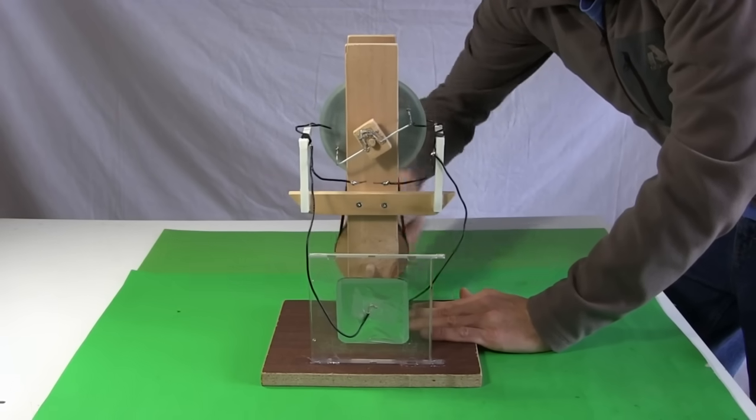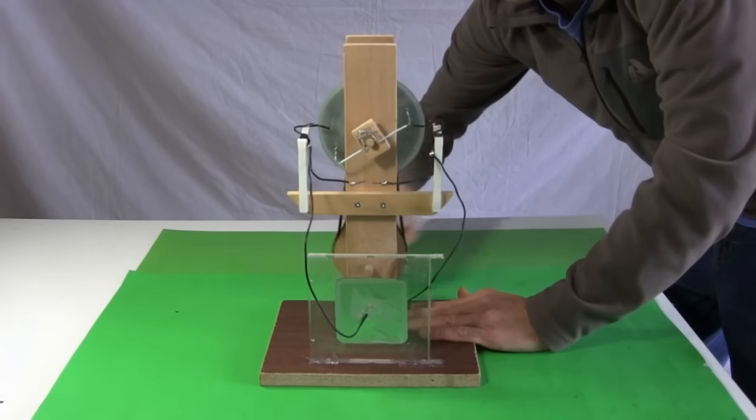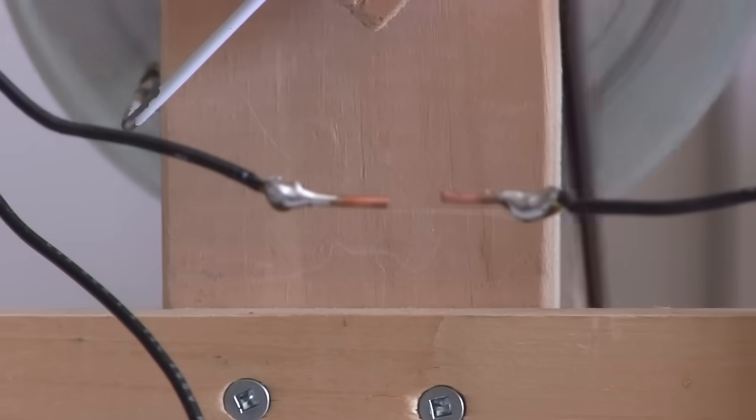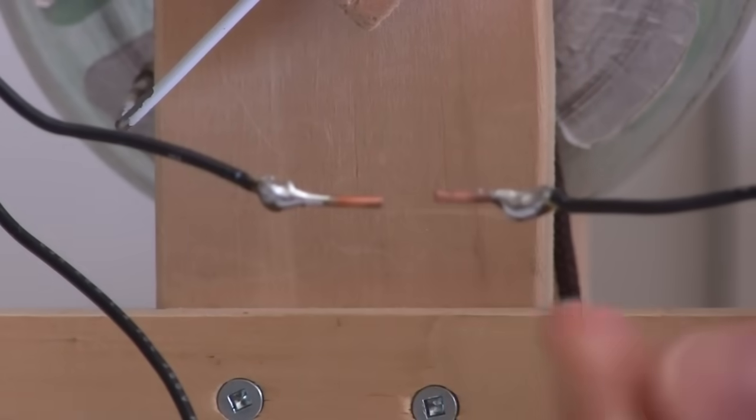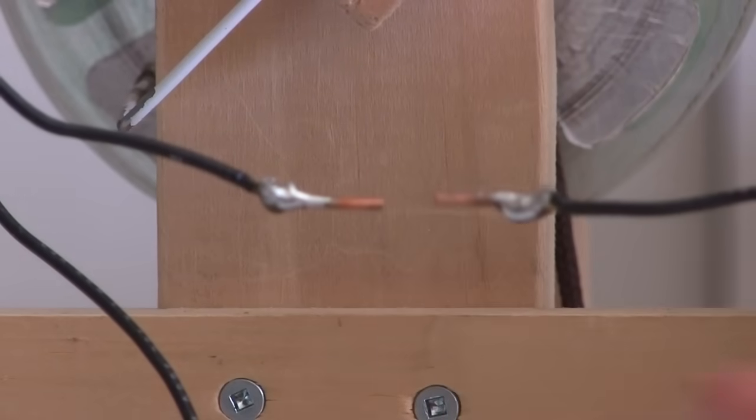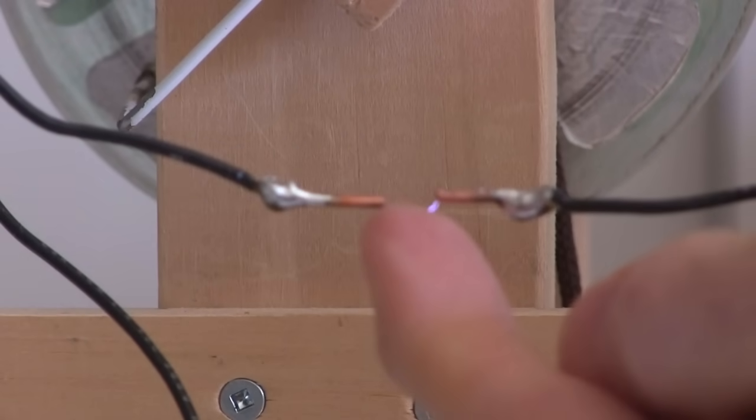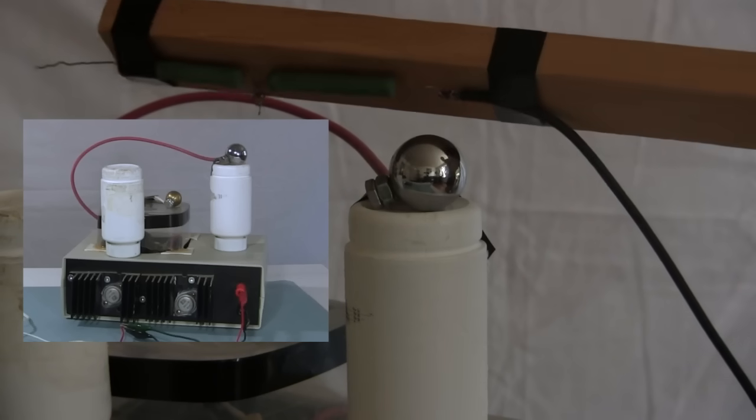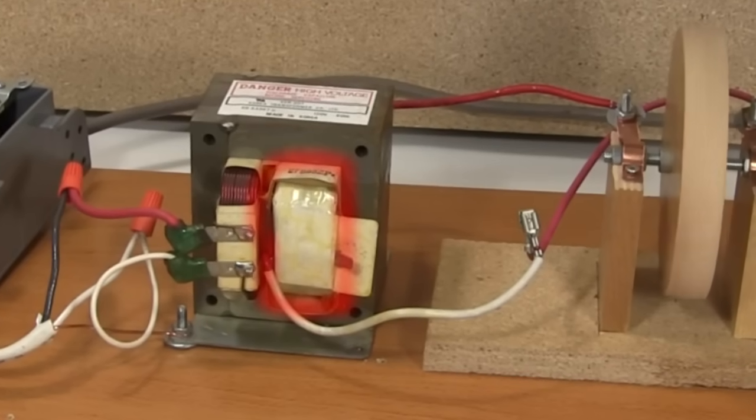The same applies to this small homemade Wimshurst machine. The voltage can be in the thousands, but the current is small and lasts for only a short time. That's not to say that a brief shock can't cause some harm, like a moment of pain as it burns your skin. I wouldn't want to get a shock from this big Van de Graaff generator, or from my homemade high voltage power supply. Or worse yet, from the high voltage high current coil on this microwave oven transformer.